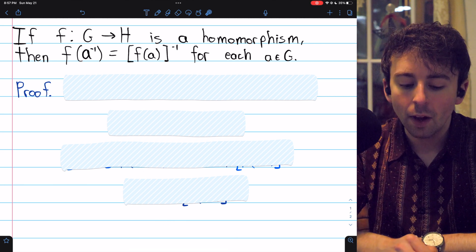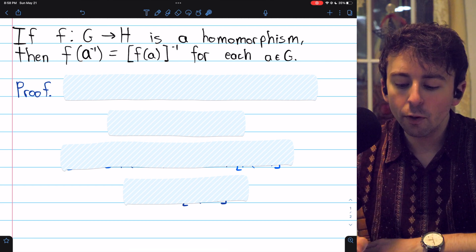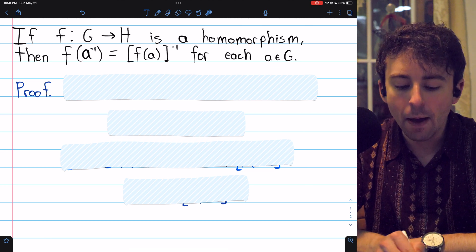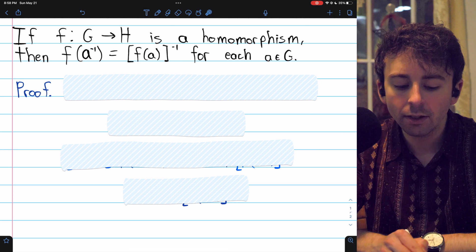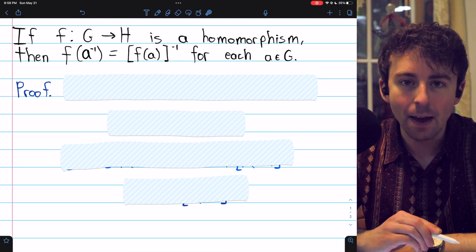To be specific, if f: G → H is a homomorphism from a group G to a group H, then for any element a in that domain group G, the image of a inverse under the homomorphism will be the inverse of a's image.